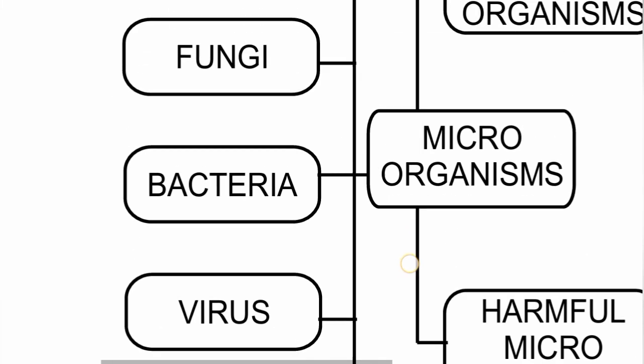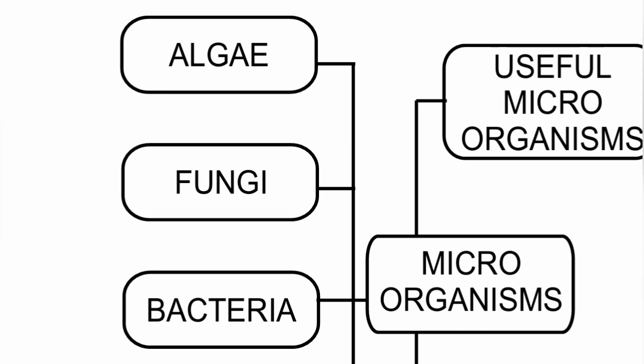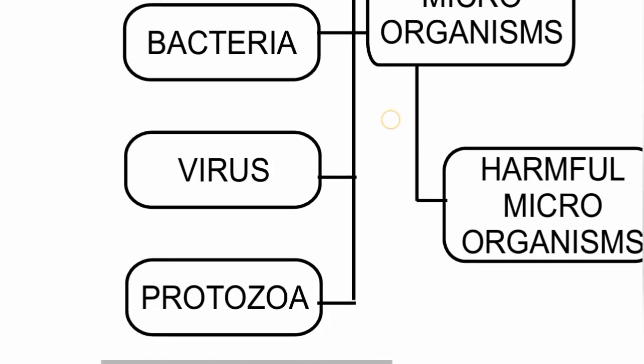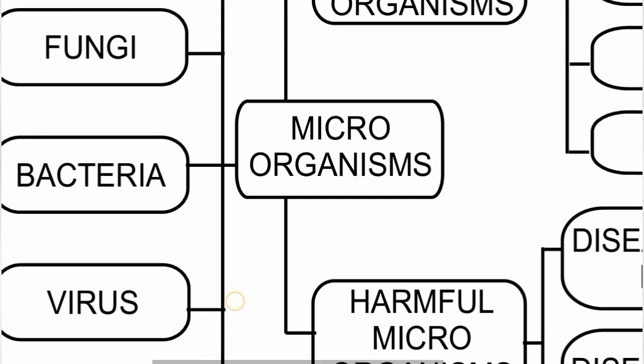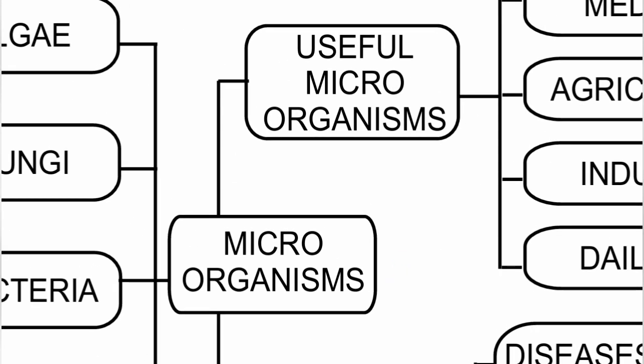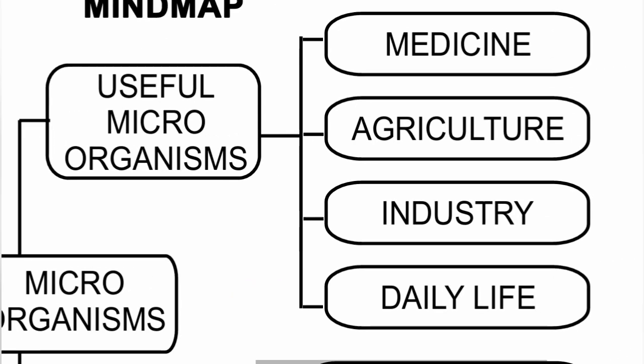Useful microorganisms — first, in the medicine field: antibiotics and vaccines. Antibiotics are used for fevers and infections. Vaccines are also part of the medicine line. These are the key contributions of microorganisms in medicine.